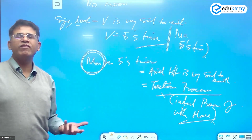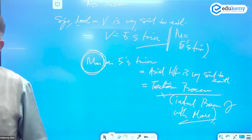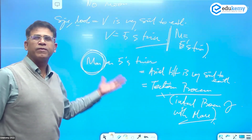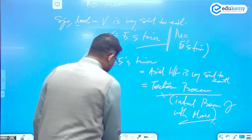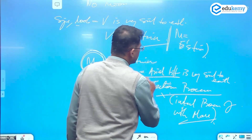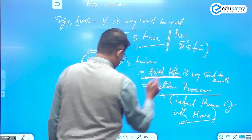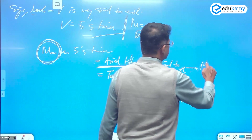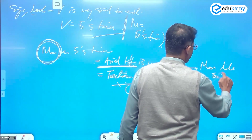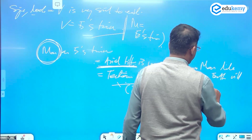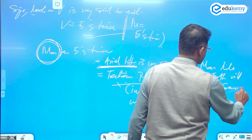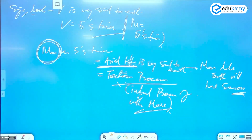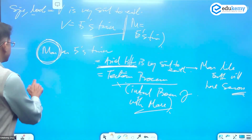Some call Venus Earth's twin, others say Mars is more like Earth. That's why when we talk about habitation or colonies, we look at Mars more. A key consequence of axial tilt is that Mars, like Earth, will have seasons.